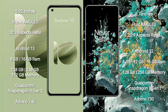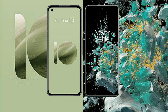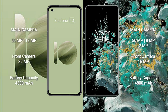OnePlus 10T comes with 8GB, 12GB, or 16GB RAM and 128GB or 256GB internal storage. It features a Qualcomm Snapdragon 8 Gen 1 processor with an Adreno 730 GPU.